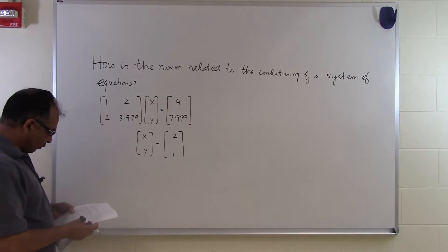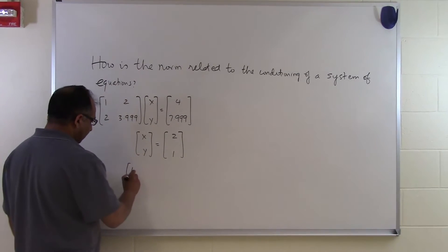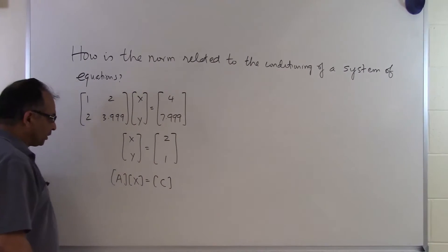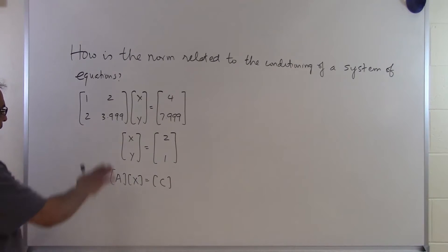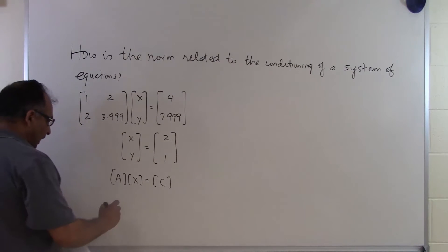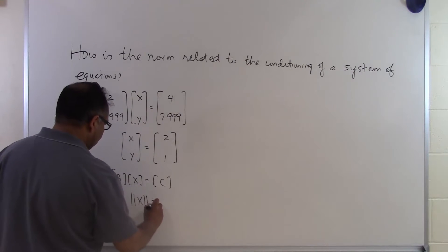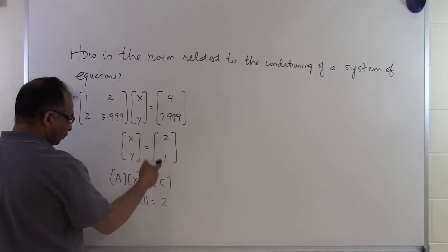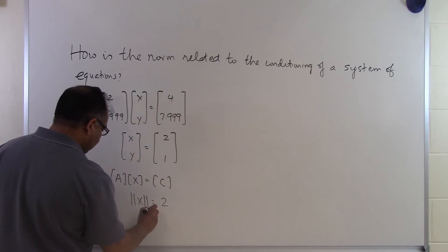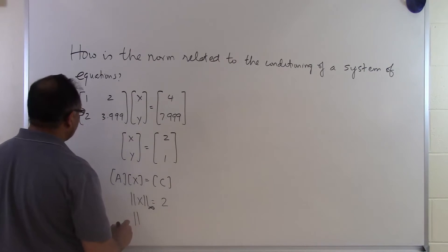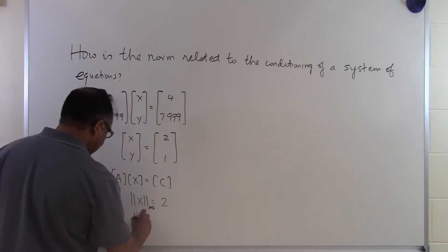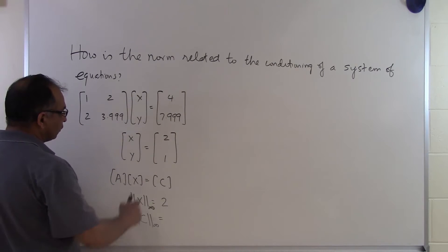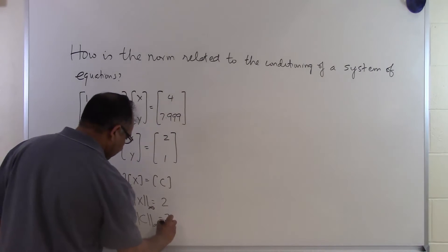If we denote this as A times x equals c — that's the matrix form for this set of equations — then the norm of x, using the infinite norm or row-sum norm, is simply 2, because that is the maximum value. The infinite norm of c is 7.999.